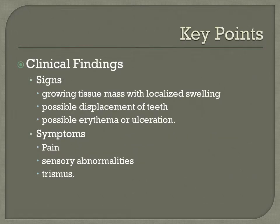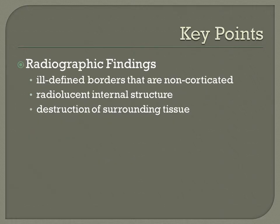To summarize the key points, clinical findings of fibrosarcoma include signs such as a growing tissue mass with localized swelling, possible displacement of the teeth, and possible erythema or ulceration. Symptoms include pain especially during expansion of the bone, possible sensory abnormalities, and possible trismus. Summary of the radiographic findings include ill-defined borders that are non-corticated, radiolucent internal structure, and destruction of surrounding tissue.